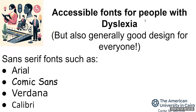This is truly the easiest accessibility tip ever, and you can do it right now: just use accessible fonts. This makes it easier for people with dyslexia to follow your slides or readings, and it's just generally good design for everyone. It's basically just using sans-serif fonts such as Arial, Comic Sans, Verdana, and Calibri — fonts that are probably familiar to you and available on most platforms.